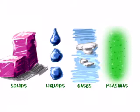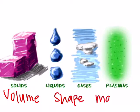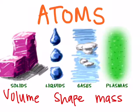All of these states of matter have three important properties which are volume, shape, and mass. Before we go any further it's important for everyone to know that matter is made up of atoms. Atoms are tiny particles that we're going to talk more about later on, but they are the smallest piece of matter and they are used to make up things like elements and compounds.